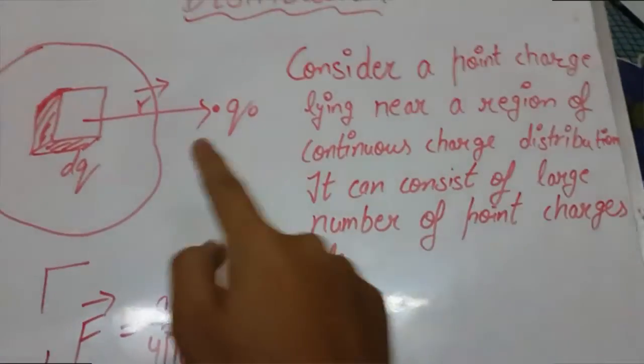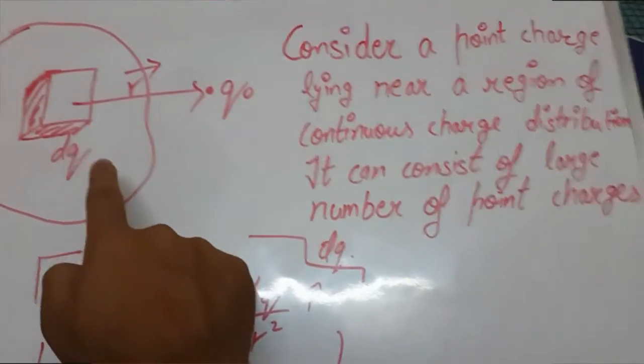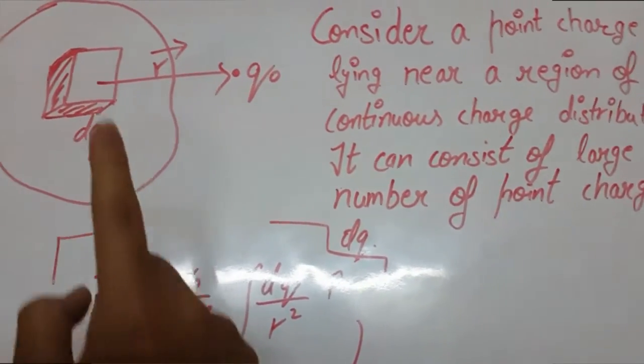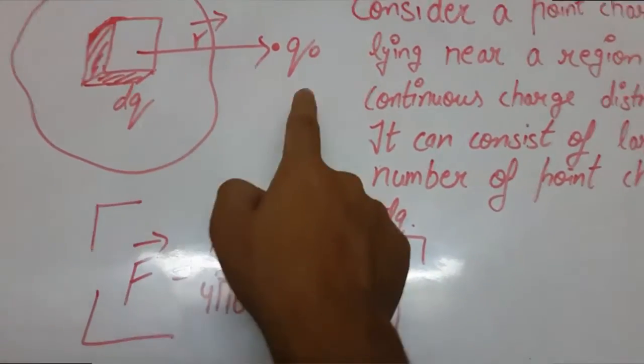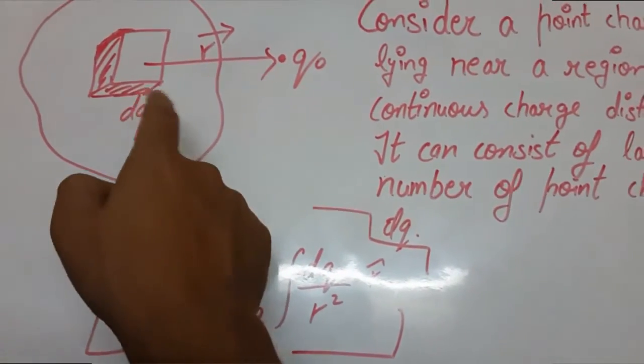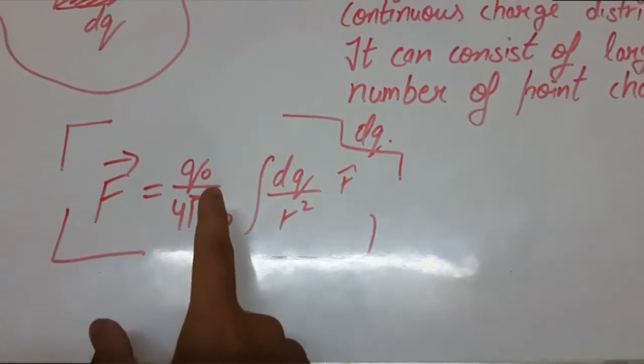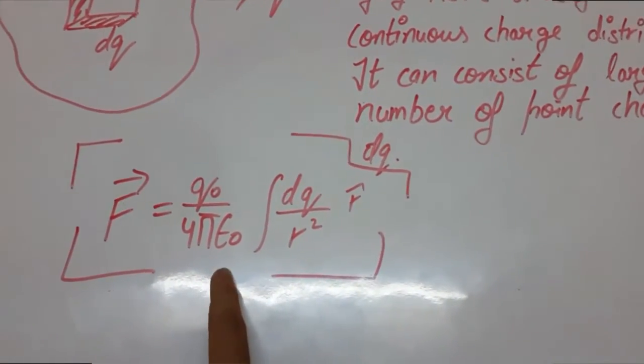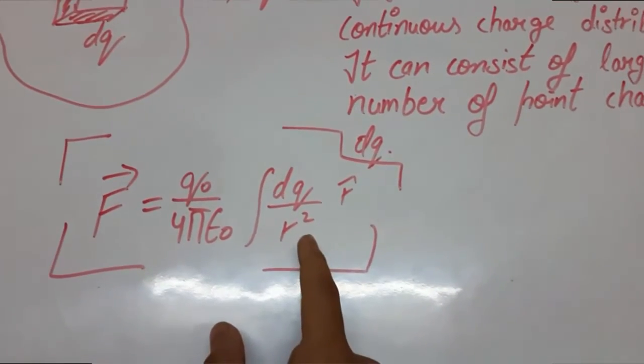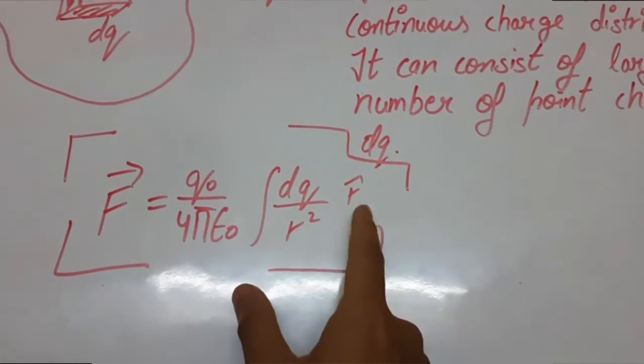Now we will consider a q0 charge which is lying near a region of continuous charge distribution. This region can consist of large number of point charges which is dq. So the force experienced by the q0 charge due to this region or the number of charges is equal to q0 upon 4 pi epsilon 0 into integral of dq upon square of distance between them and r cap we are using for the direction.